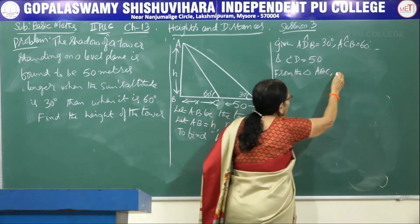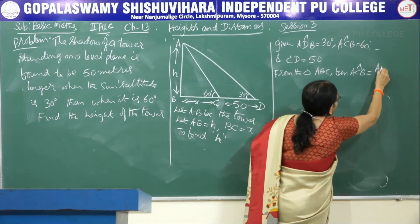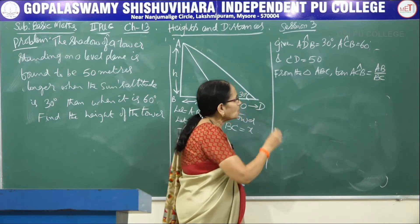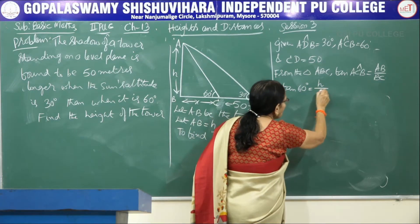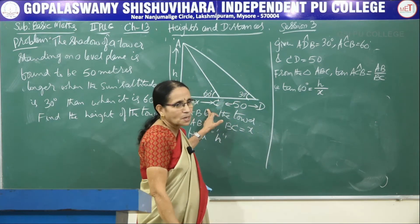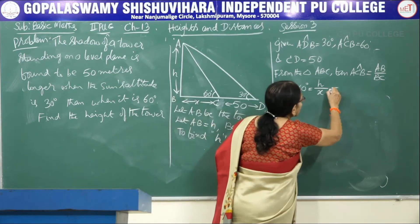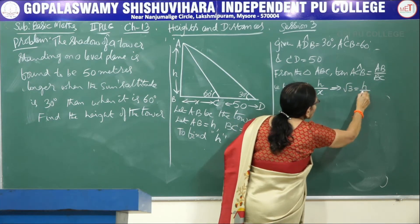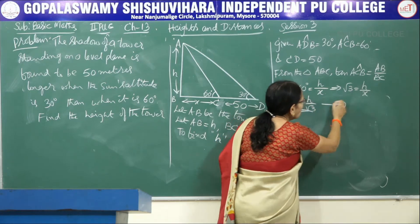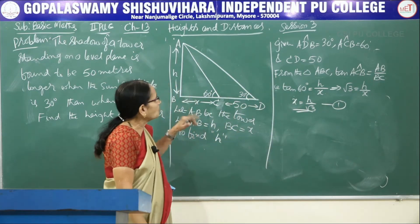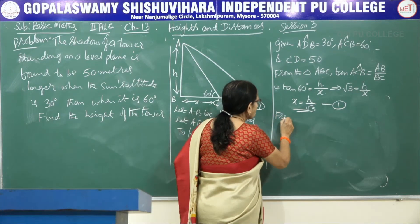From triangle ABC, consider tan of angle ACB. According to the figure it is AB divided by BC. Writing actual values: tan 60 degrees equals H divided by X. What is tan 60? It is root 3. So root 3 equals H by X, which implies X equals H by root 3. This is the first result we are getting.